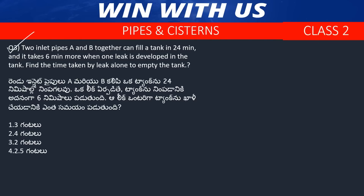Question number 3. Two inlet pipes A and B together can fill a tank in 24 minutes. When a leak develops, it takes 6 minutes more — so A plus B with leakage takes 30 minutes to fill the tank.